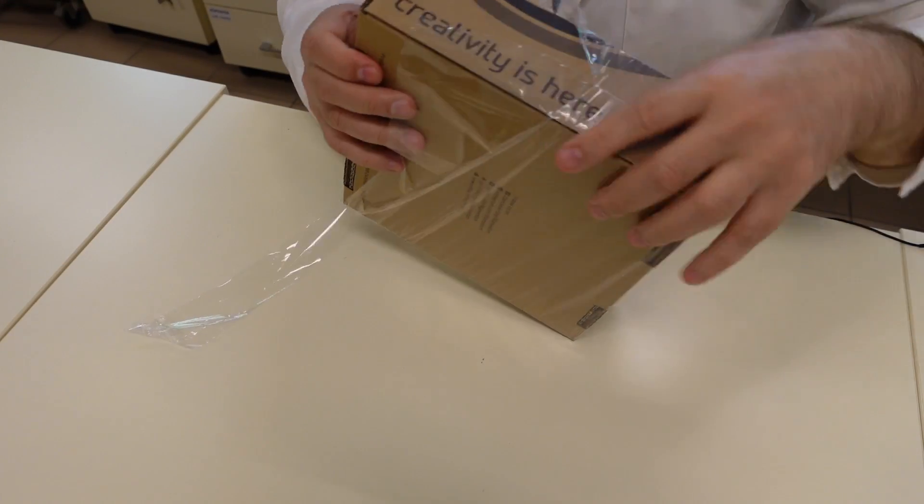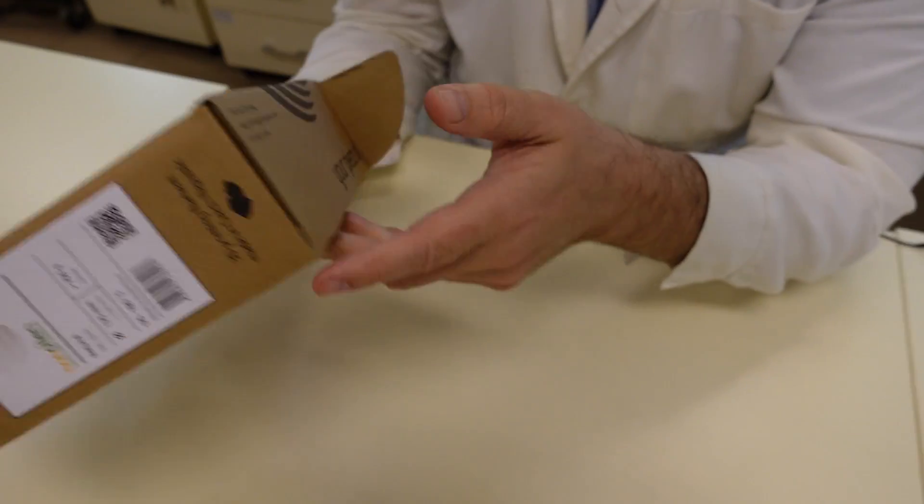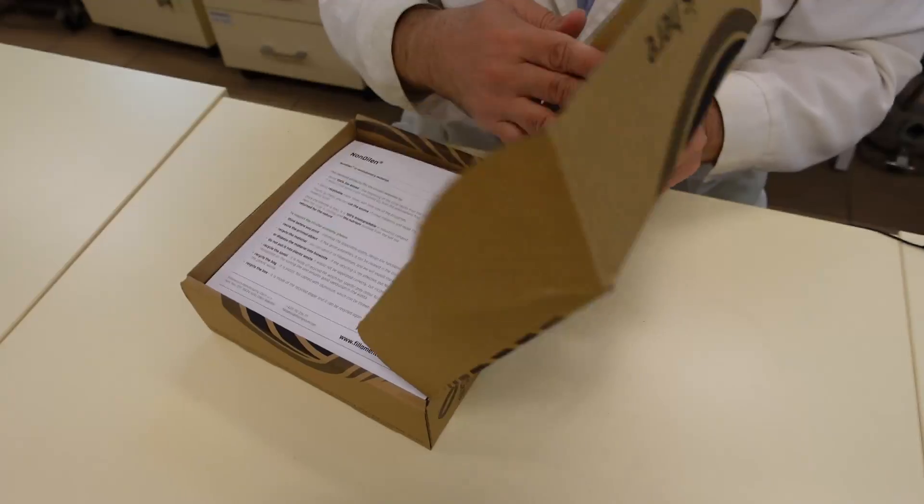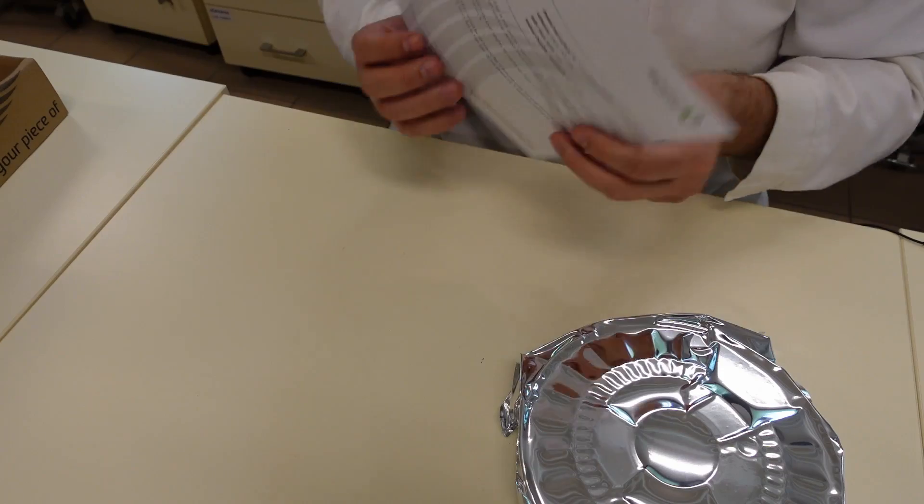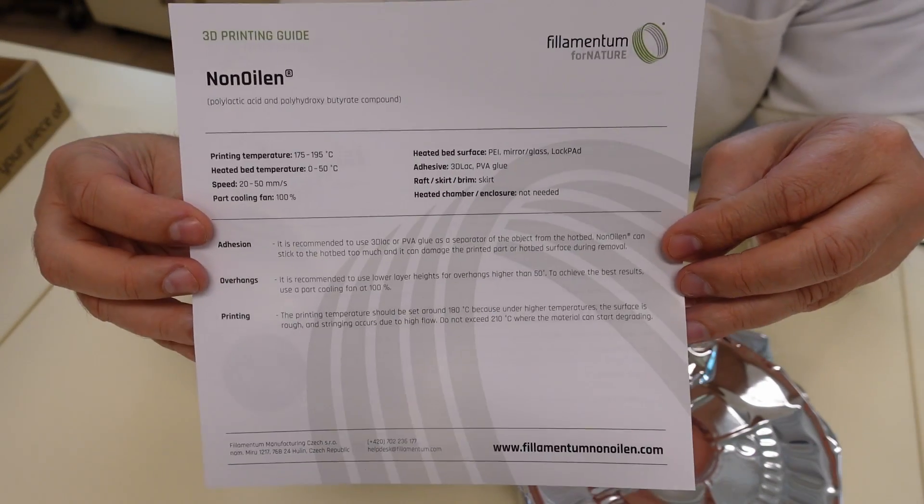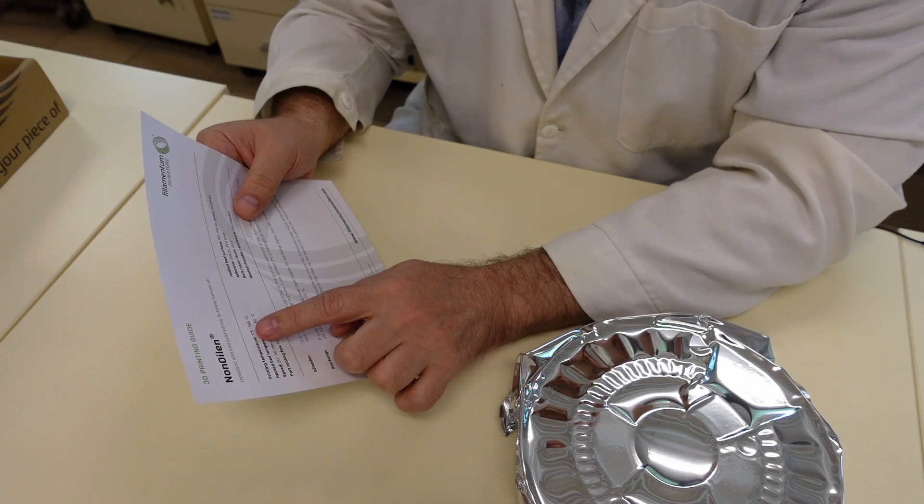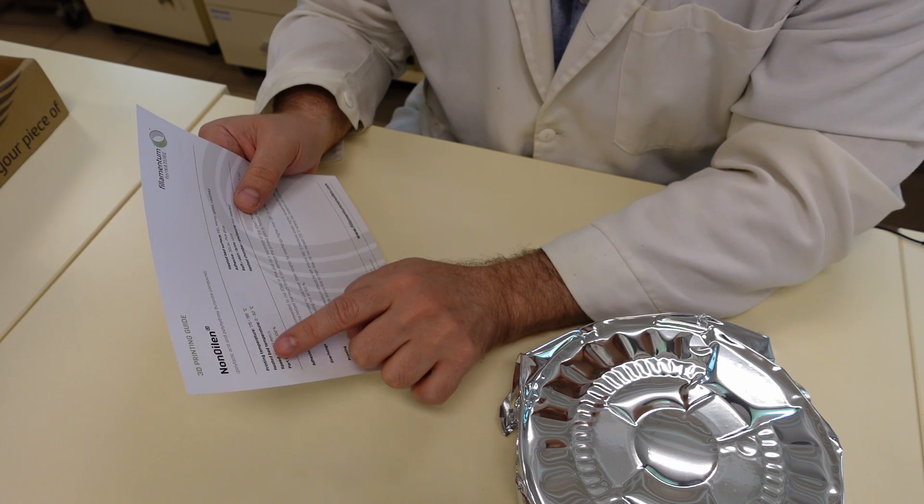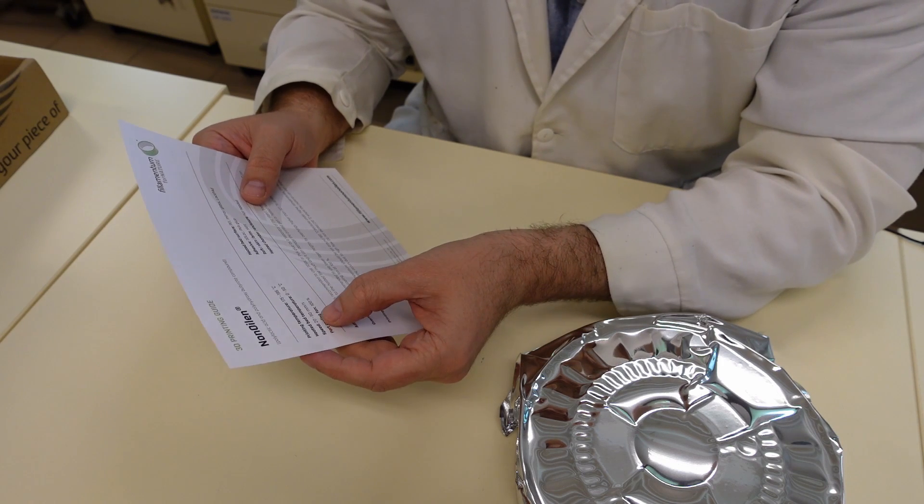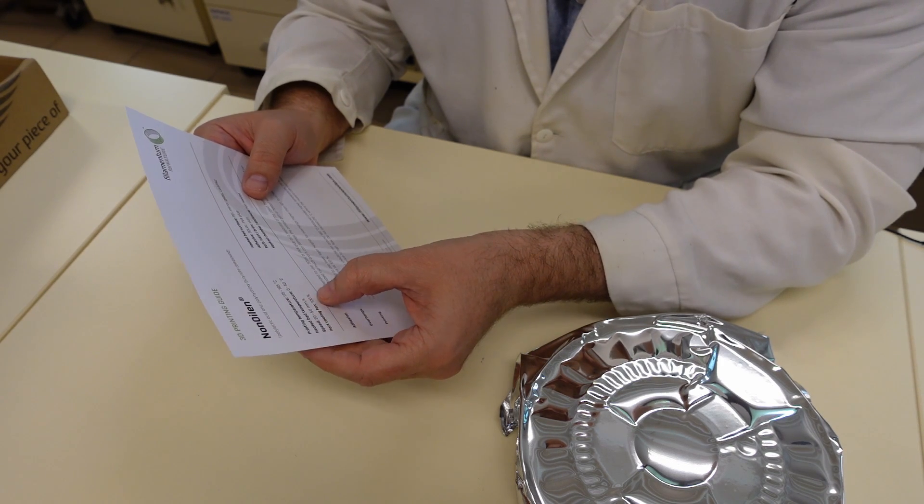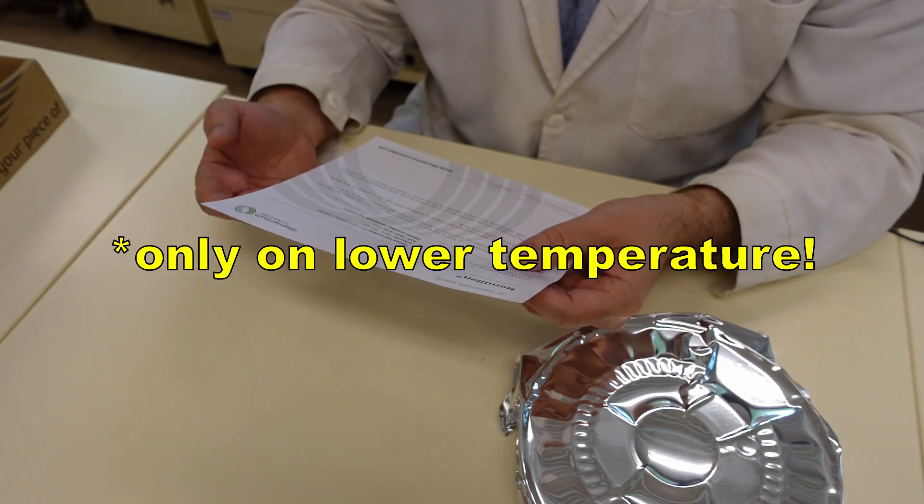Let's see what's inside. Sticker. A printing guide. So again, printing temperature 175 to 195, heated bed temperature between 0 and 50 degrees Celsius, speed between 20 and 50 millimeters per second, and part cooling fan up to 100%, so definitely it should be printed like PLA.